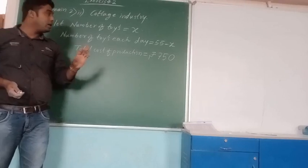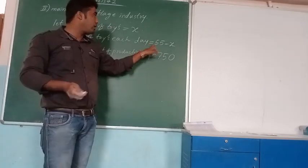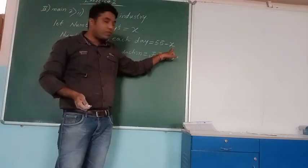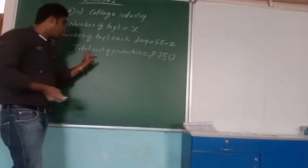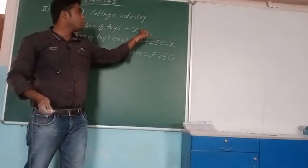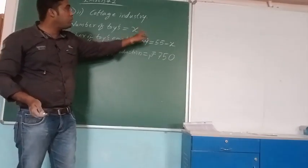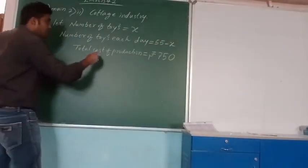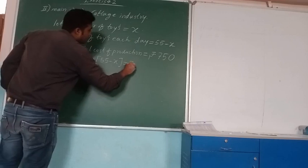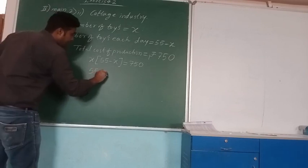Number of toys per day is given as 55 minus the number of toys, which means 55 minus x. The total cost of production is 750. We need to multiply these two, so we get x multiplied by (55 minus x) which is equal to 750. Expanding: 55x minus x squared equals 750.